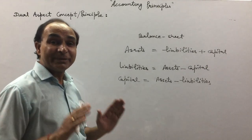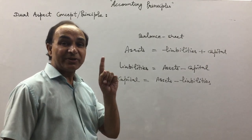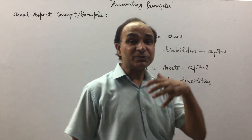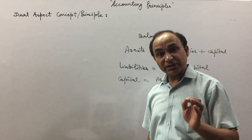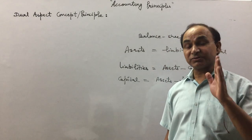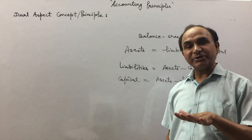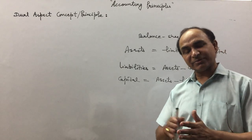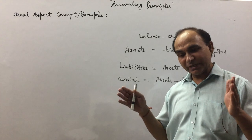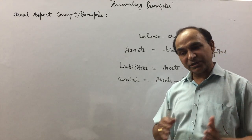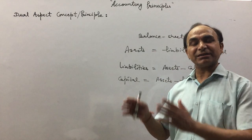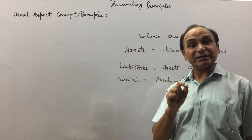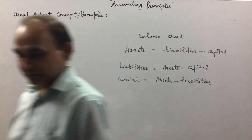It is on the basis of this dual aspect concept or principle that this system works. This principle provides the base for recording all transactions in the books of accounts. Some accounts are debited, some accounts are credited, and accordingly we keep on recording transactions. This is the importance of the dual aspect concept.